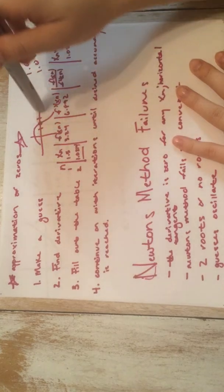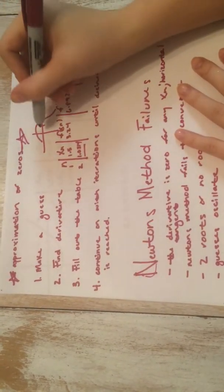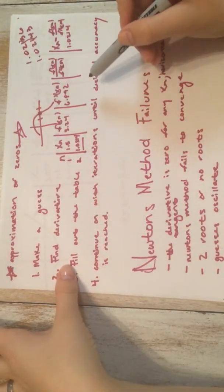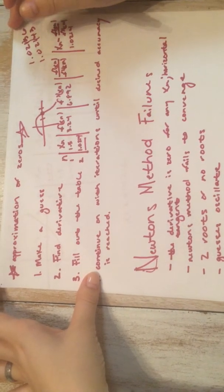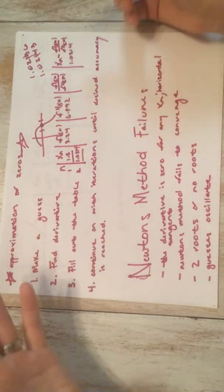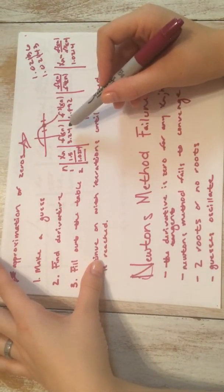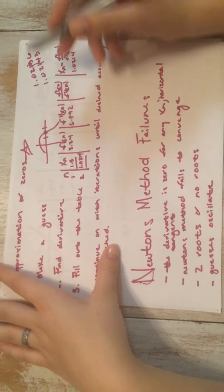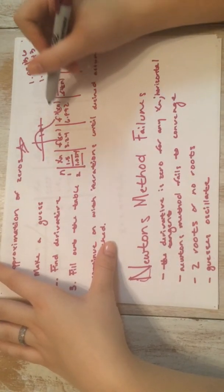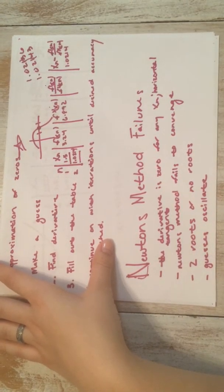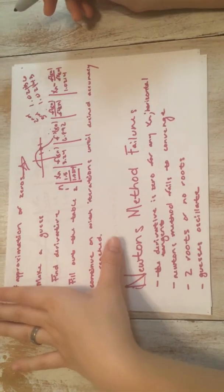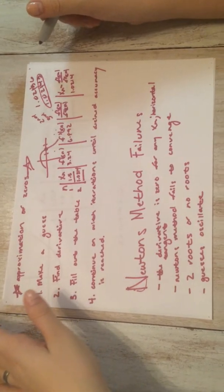There are steps in Newton's method. First, we're going to make a guess that is close to the zero. So if we have this function, say this is 1 and this is 2, we see that the zero is somewhere around 1.5. So that will be our initial guess. Then we're going to find the derivative of this function, and after that we'll be able to fill out the table.